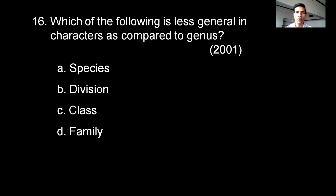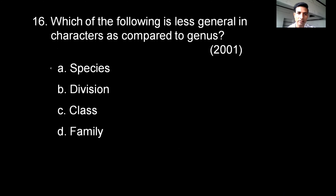Which of the following is less general in characters as compared to genus? Options are species, division, class, or family. The correct option is species, as it is more specific and less general than genus.